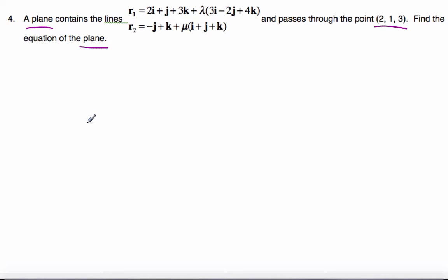So if I think about these lines, I have line R1 here, and I have some line R2 here. I don't know if they actually intersect, but I do know that if the plane contains them, if they are on the same plane, they will intersect somewhere.